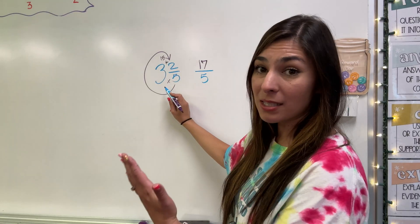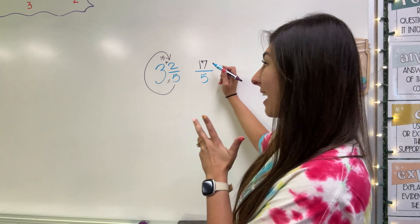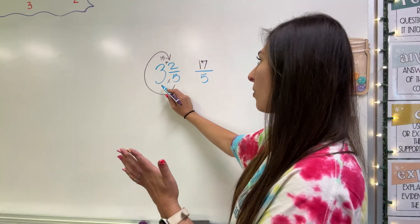So now my mixed number has been converted into an improper fraction. See how that numerator is bigger? That's because there's actually a full three in there. We can fit a whole number in there. Let's do another one.